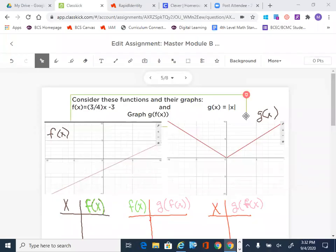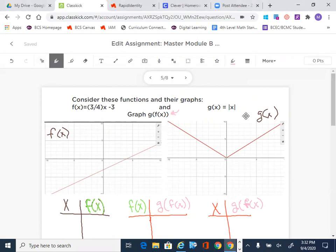All right, now we're going to do some compositions of functions, but we're going to do it graphically. So it says, consider these functions and their graphs: f(x) = 3/4x - 3 and g(x) equals the absolute value of x. And it says graph g of f of x. We can do this with Desmos, but we're going to be looking at it through points today.